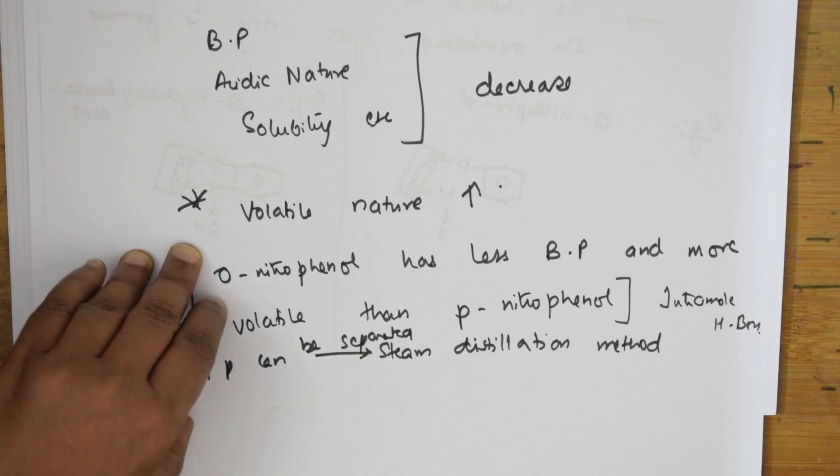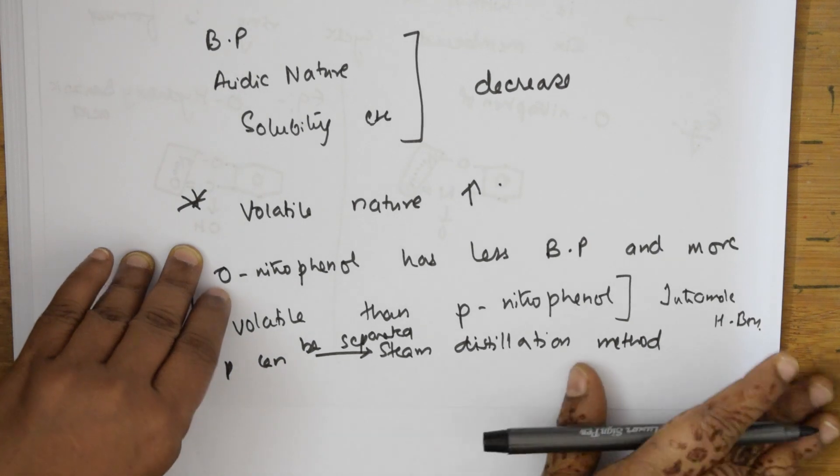Next, an important thing to remember after studying the effects of hydrogen bonding: how is it affecting alcohols, ethers, acids, carbohydrates, and all other content? We will meet you with this concept in the next video. Thank you for watching, students.